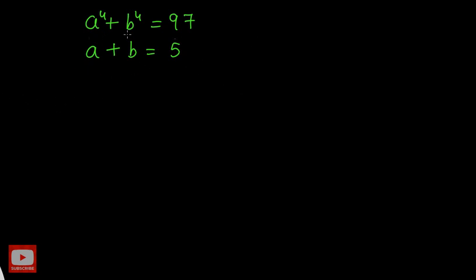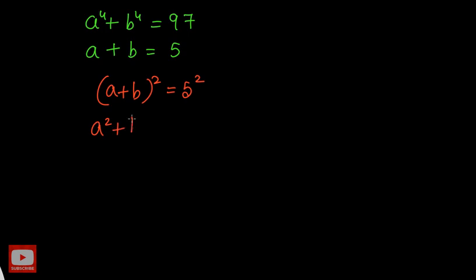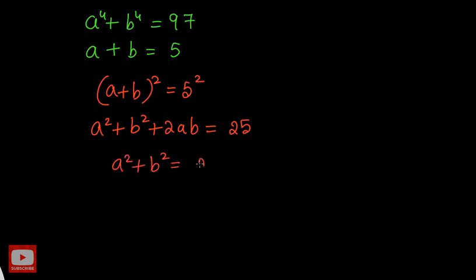I would like to solve from the second equation, a plus b equal to 5. I am going to raise this equation to the power of 2 on both sides, that is (a + b)² equal to 5², which is 25. Using the identity, a plus b whole squared equals a squared plus b squared plus 2ab equal to 25. Taking 2ab to the right-hand side, a squared plus b squared equals 25 minus 2ab.